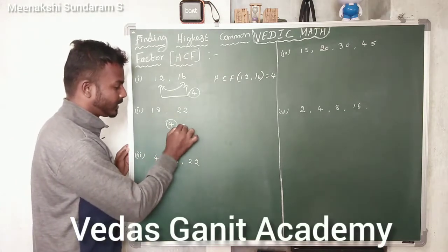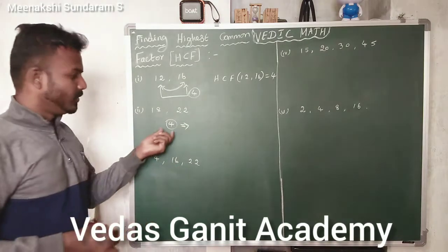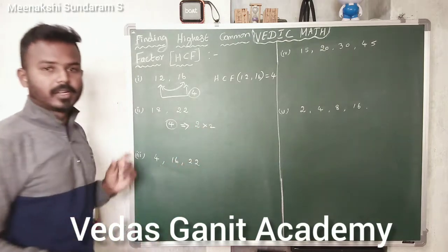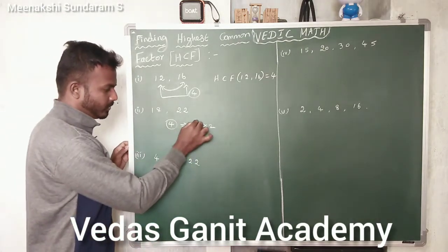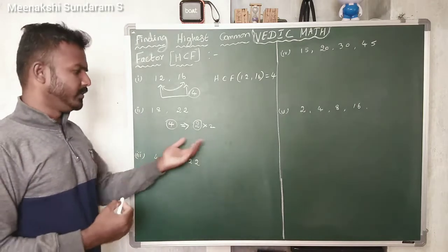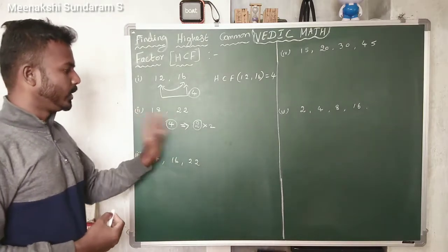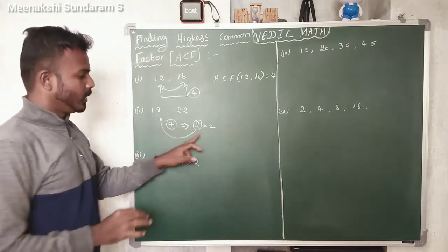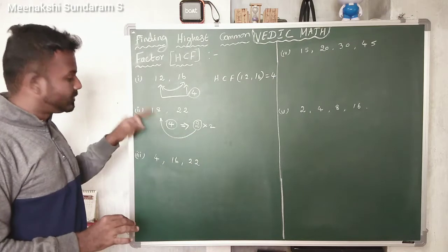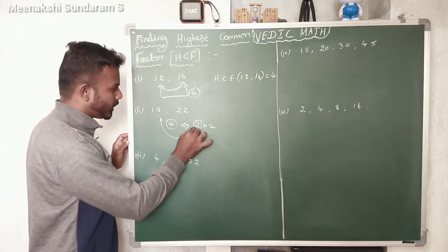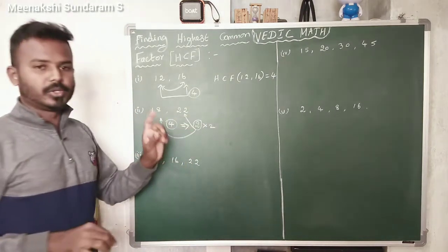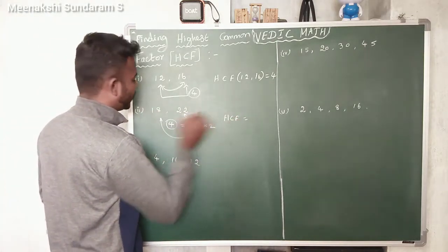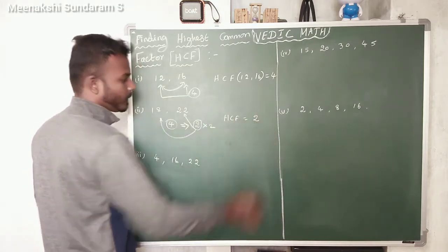So what are you supposed to do? Find the factors of the difference. The difference here is 4, so find the factors of 4: 2 into 2. Now take the smallest factor, which is 2. Check whether 2 divides 18 — yes, 2 divides 18. Next, check whether 2 divides 22 — yes, 2 divides 22. Therefore, the HCF of 18 and 22 is 2.